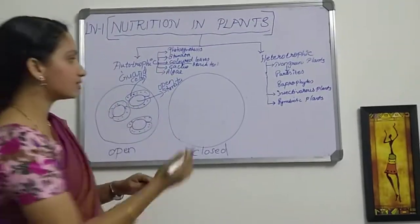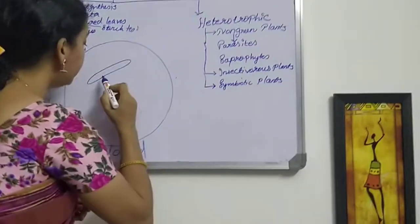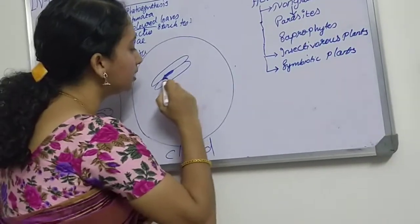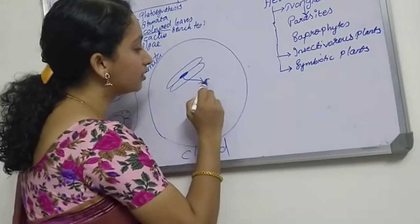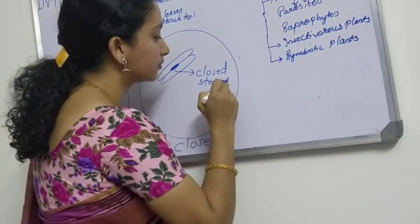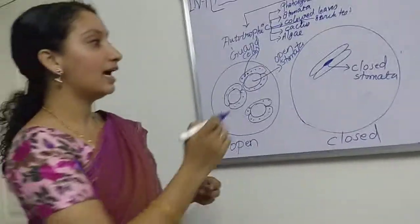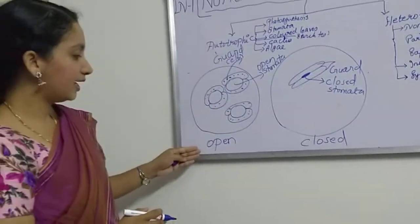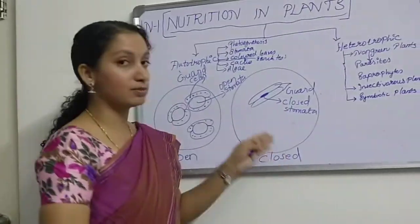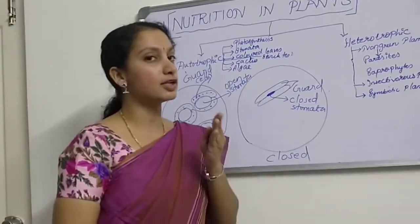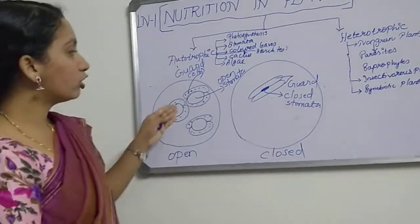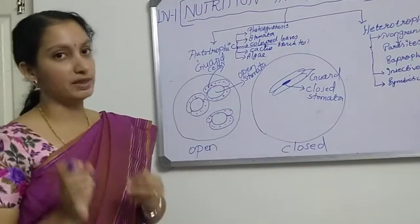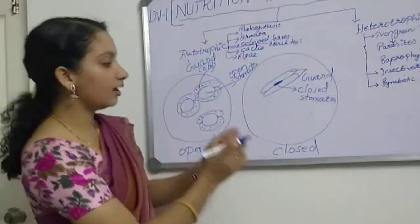Moving to the closed stomata: the center part showing the stomata is now closed, because there is no exchange of gases. These two structures represent guard cells. The first diagram shows open stomata; the second one is closed because there is no exchange of gas by photosynthesis or respiration. The chloroplast is a structure present in the guard cells which contains the pigments.